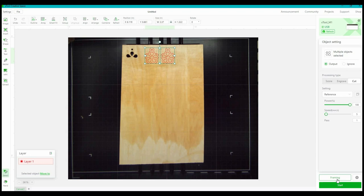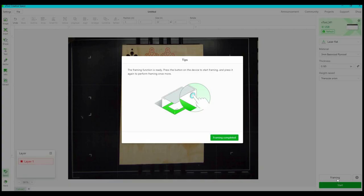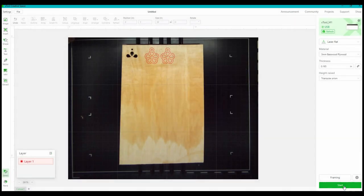The next step I want to do here is frame this. So I'm just going to go over and hit the frame button on the machine. This is going to outline the design and show me exactly where the cut is going to happen. And with the framing complete I can hit start.